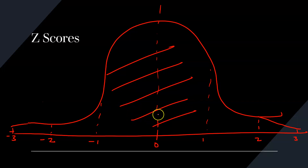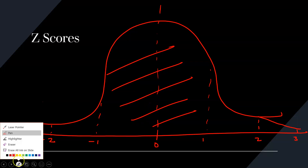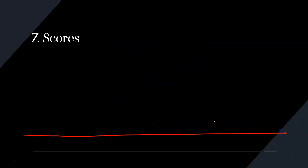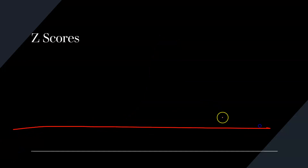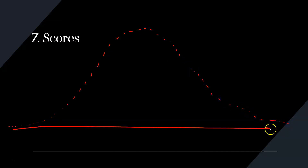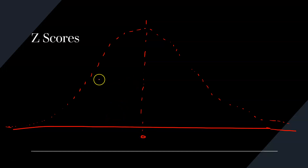Now, when we want to read what we call the Z score tables, I'm going to take you to a table. Remember, I've shown you minus 1, minus 2, minus 3, plus 1, plus 2, plus 3. I'm looking for the relationship between the probability of an event happening and where it is on the standard deviation.